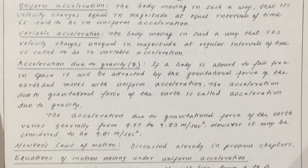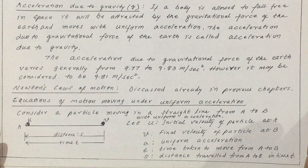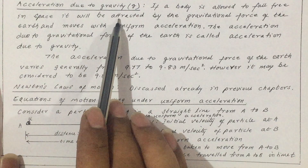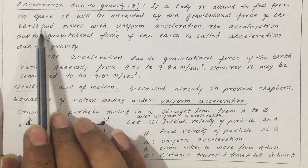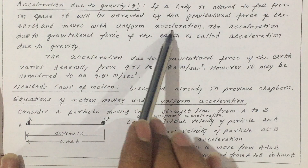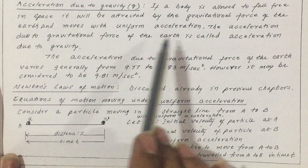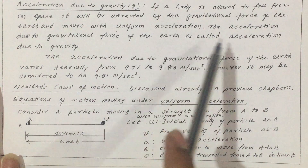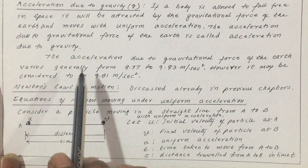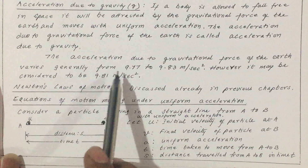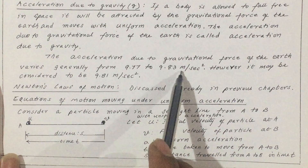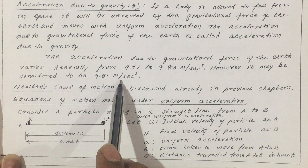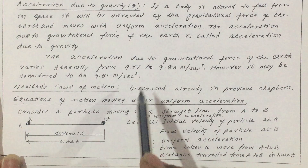Acceleration due to gravity: if a body is allowed to fall freely in space, it is attracted by the gravitational force of the earth and moves with uniform acceleration. The acceleration due to the gravitational force of the earth is called acceleration due to gravity. It generally ranges from 9.77 to 9.83 meter per second square; however, for our calculations it will be taken as 9.81 meter per second square.